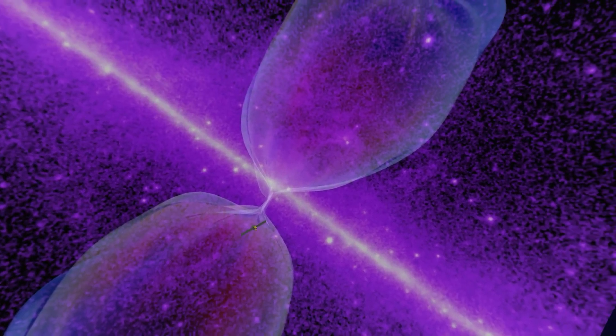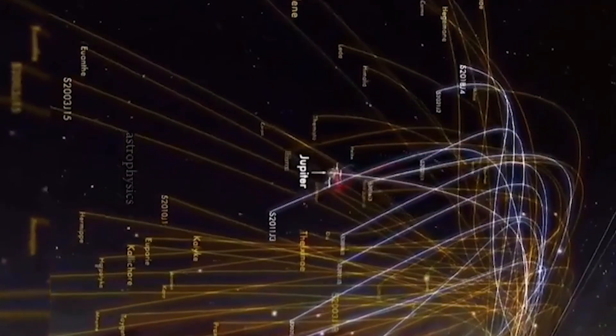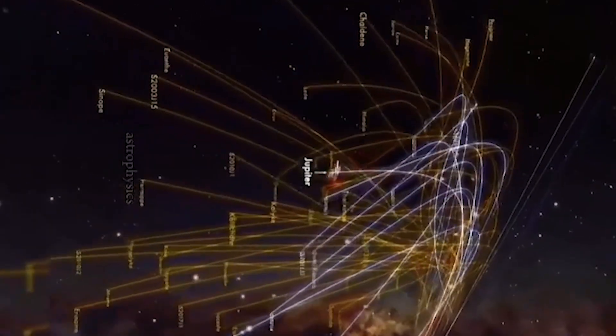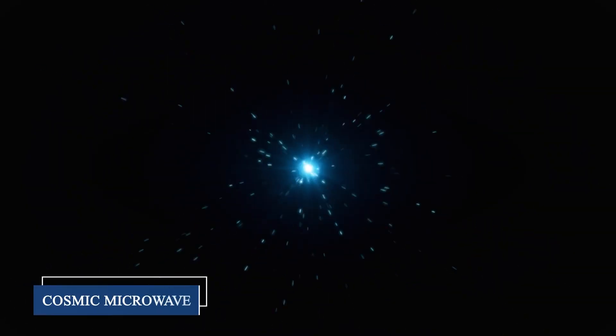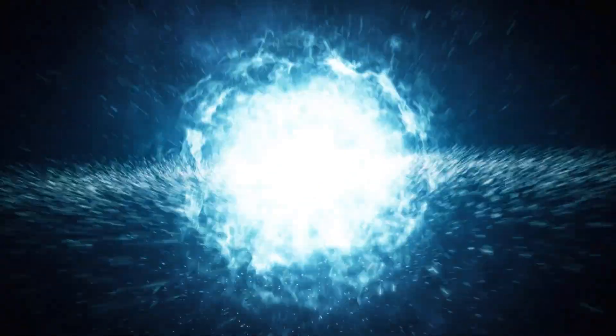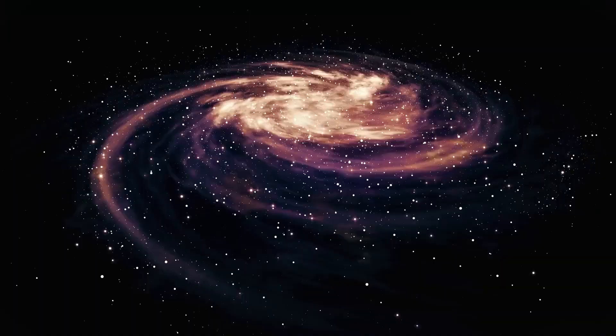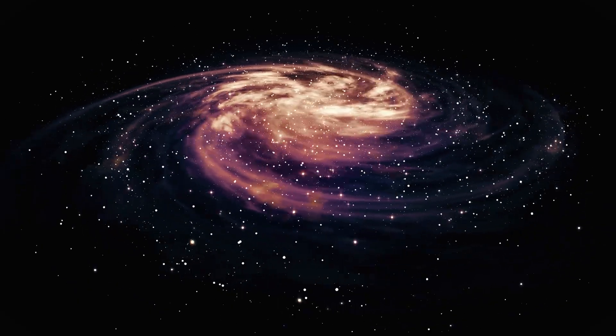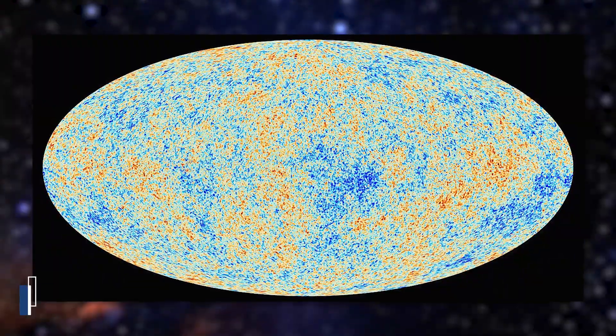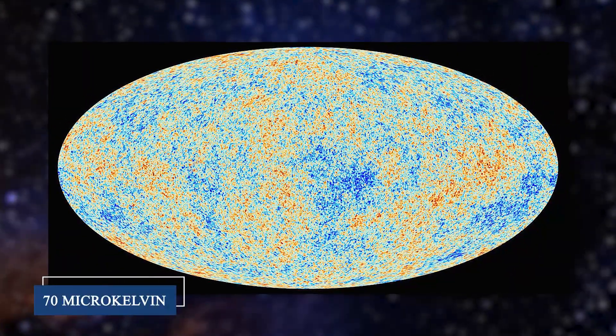Now let's talk about what's below our solar system, because this is where things get really wild. Beneath the plane of our solar system lies a region that astronomers are just beginning to understand. The cosmic microwave background, the afterglow of the Big Bang itself, shows a strange cold spot in the southern sky that's about 70 microkelvin colder than it should be.